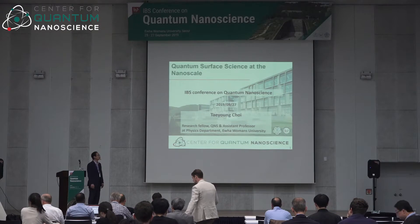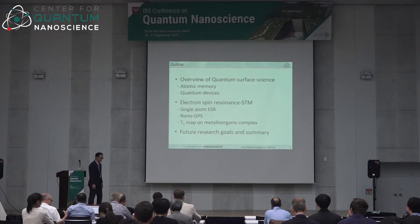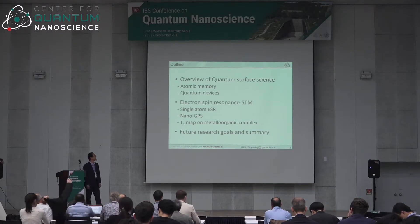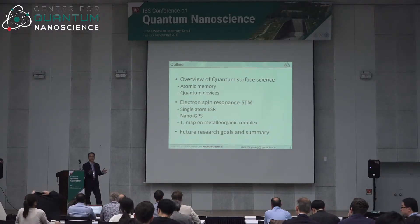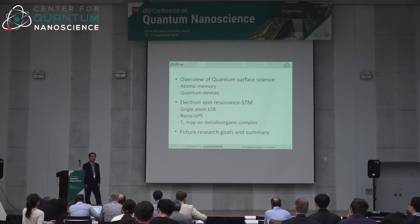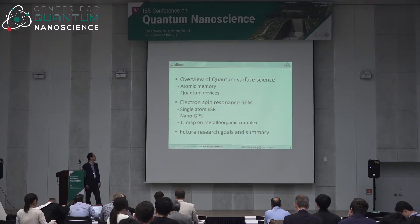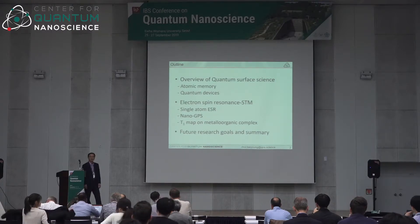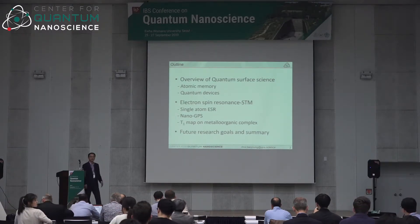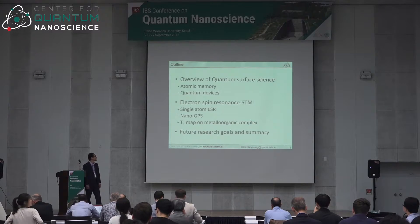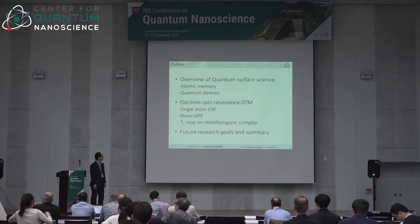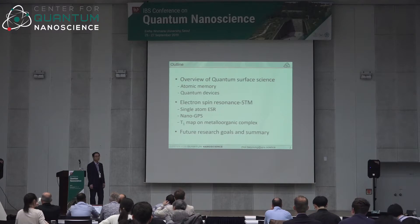In the first part of my talk, I'll give you an overview of what quantum surface science is. There's a lot of discussion about what quantumness means, so let me give you two key words: atomic memory and quantum devices in terms of surface science. Then I'll go into more detail on electron spin resonance and STM.